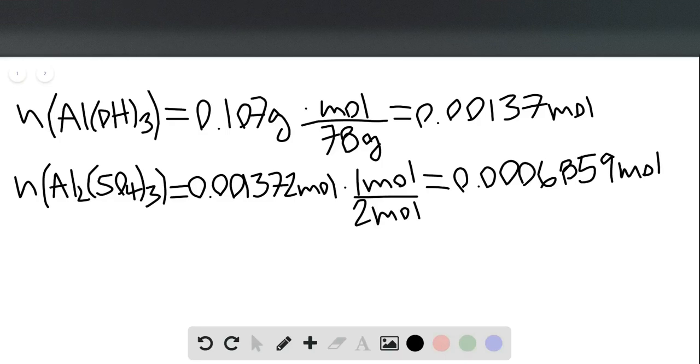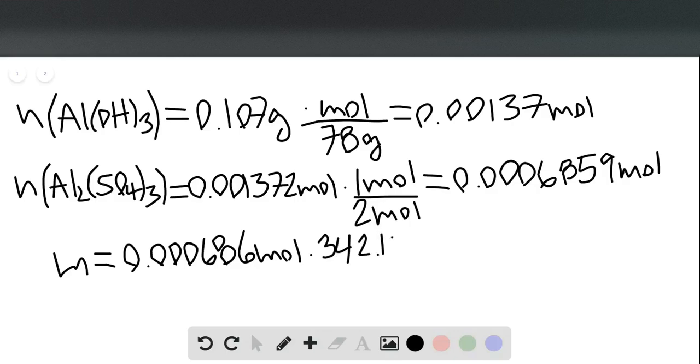So what mass is that contributing to the mixture? That would be 0.000686 moles, and then we just multiply by the molar mass, which is 342.15 grams per mole for aluminum sulfate. So that gives us 0.2347 grams.